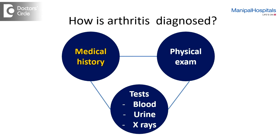In rheumatology or in arthritis, there is no single diagnostic test. Diagnosis is based on a combination of factors: medical history, physical examination, and tests which may include blood tests, X-rays, and urine tests.